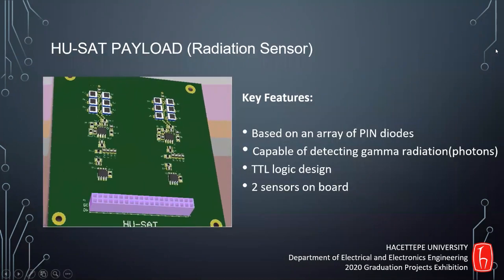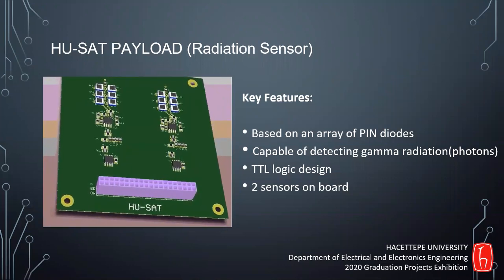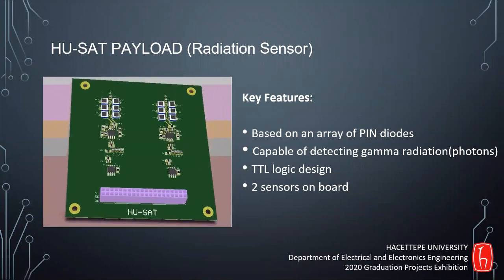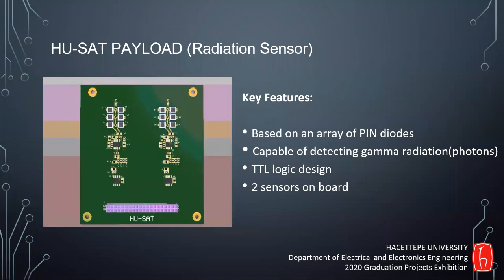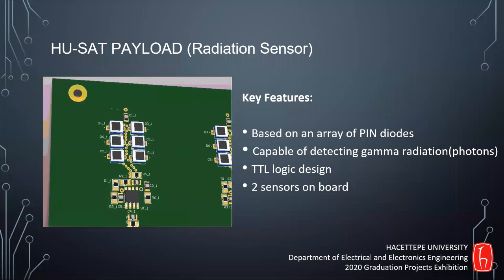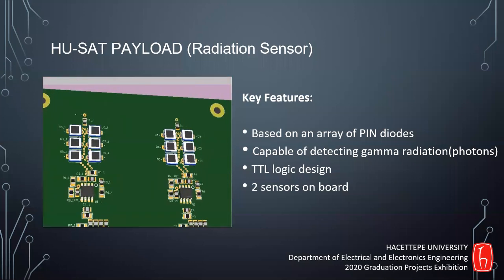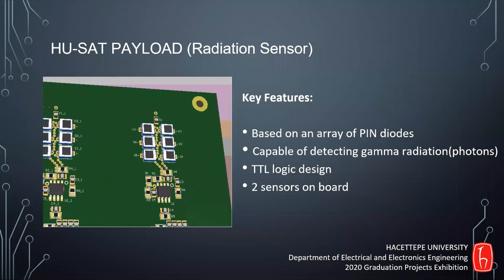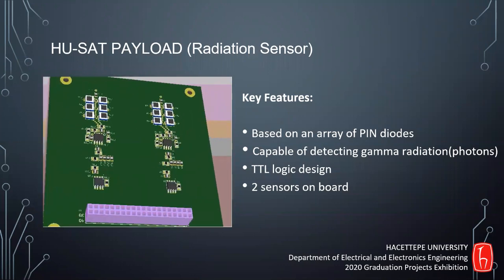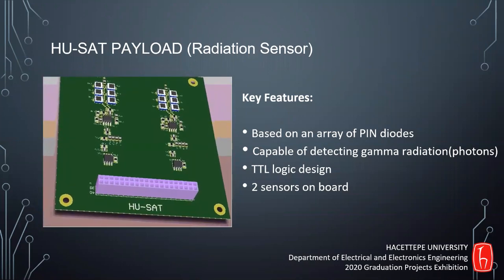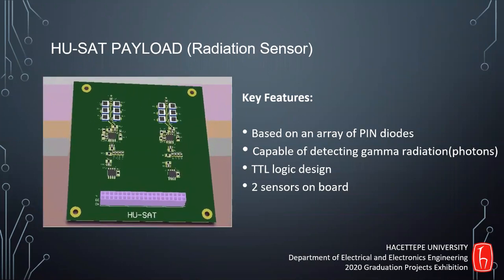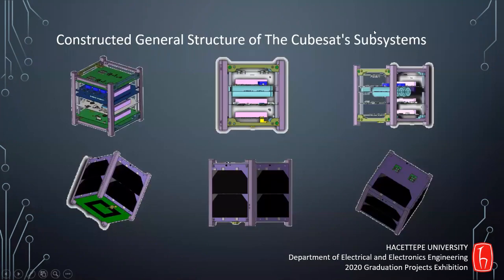A radiation sensor is chosen as the payload. It detects the radiation level which is above a specific threshold and gives results as a digital output. To maximize sensitivity and efficiency, we increase the number of PIN diodes in array form. The radiation pattern of the lower orbit can be obtained by using this system. Finally, we have completed a one-unit CubeSat structure, which is used as a generic modular satellite structure based upon the CubeSat standard.